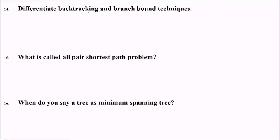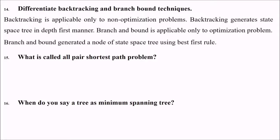Differentiate between backtracking and branch and bound techniques. Backtracking is applicable to non-optimization problems and generates state space tree in depth first manner. Branch and bound is applicable only to optimization problems and generates nodes of state space tree using best first rule.